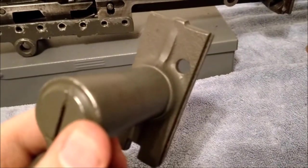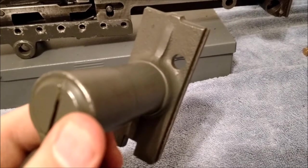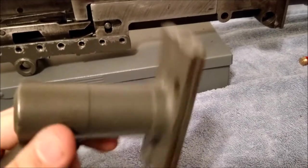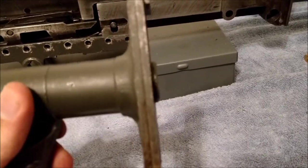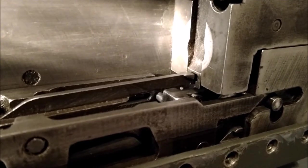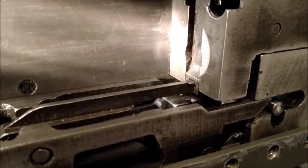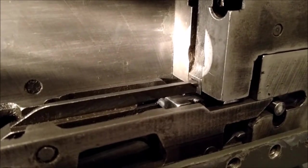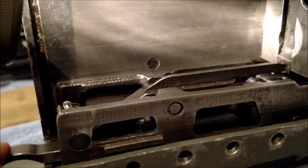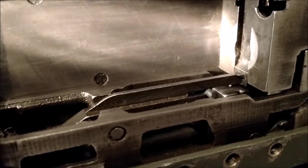So now you can see the interface of the trigger to the sear. The trigger you are actually pulling upwards and it hinges the sear downwards.